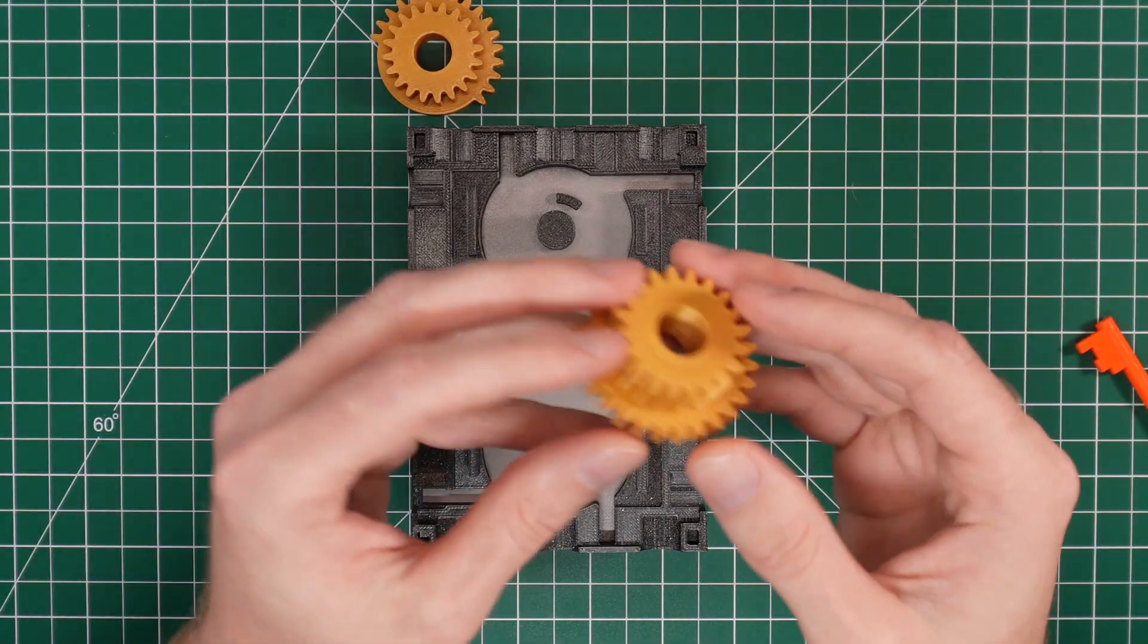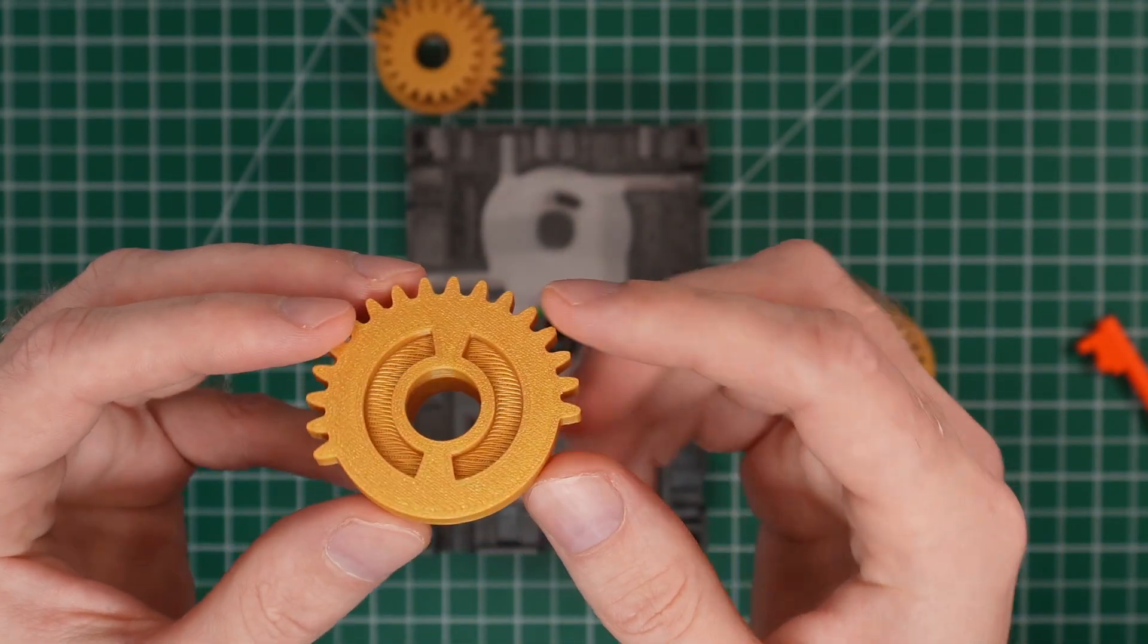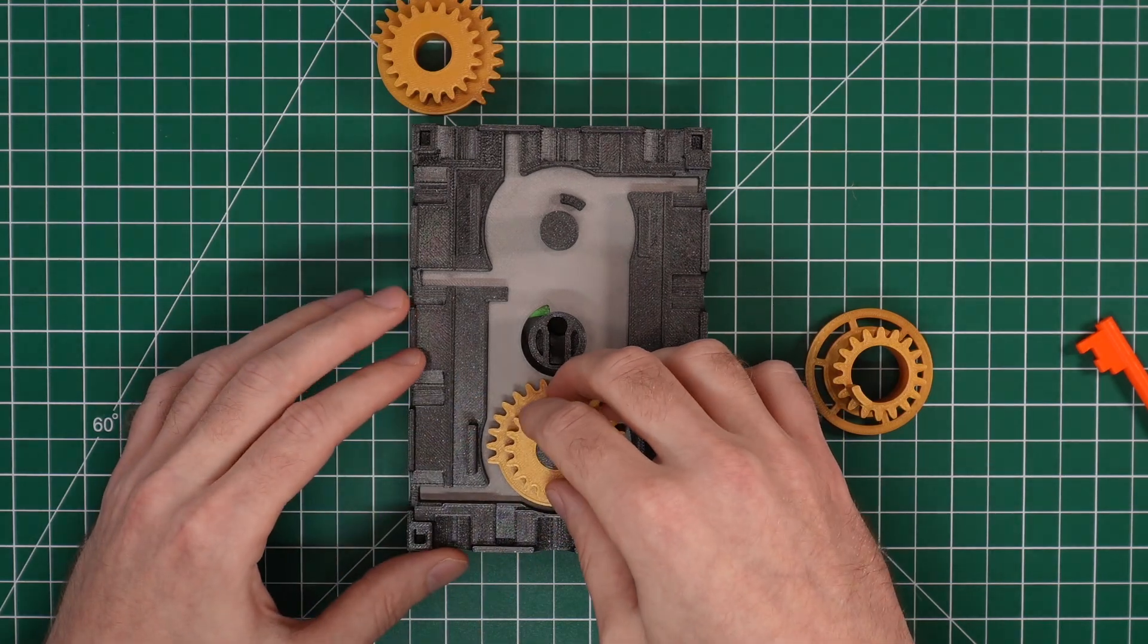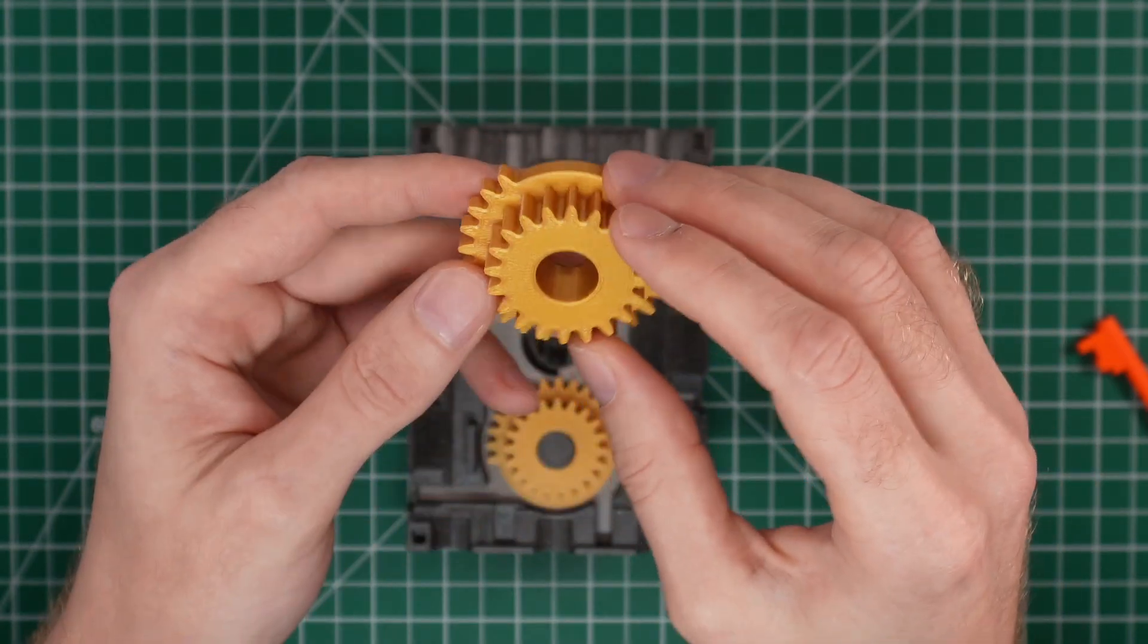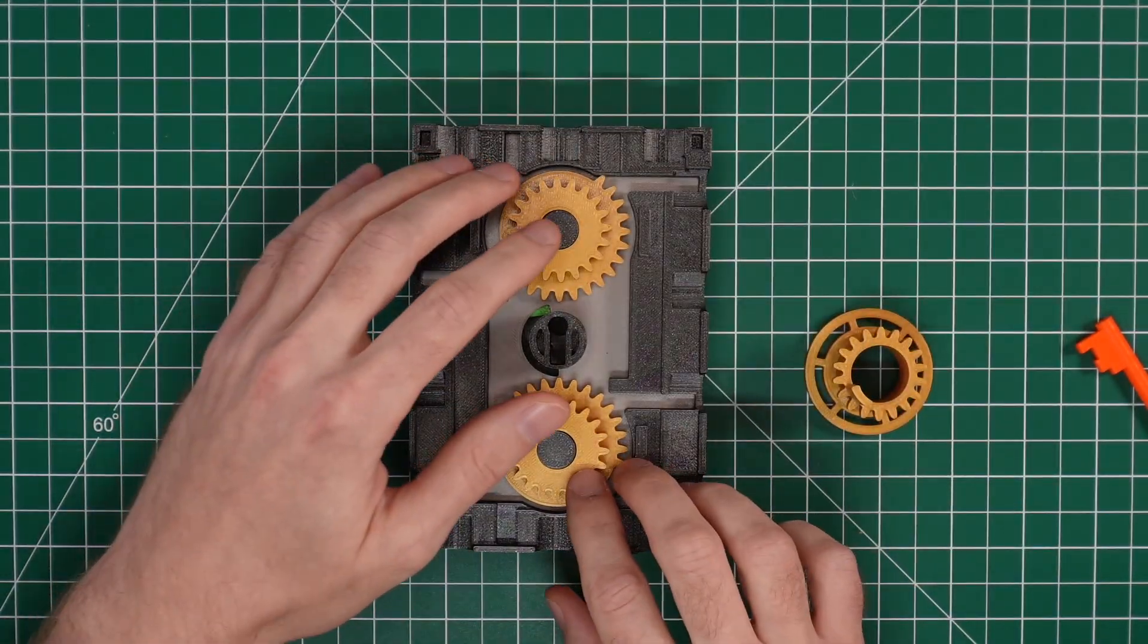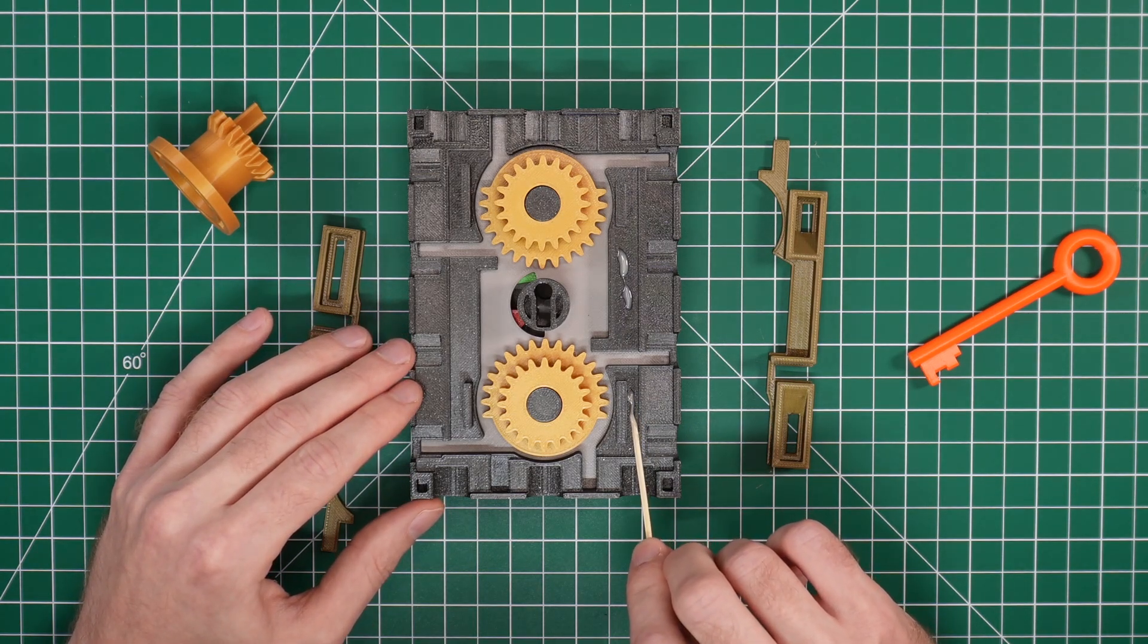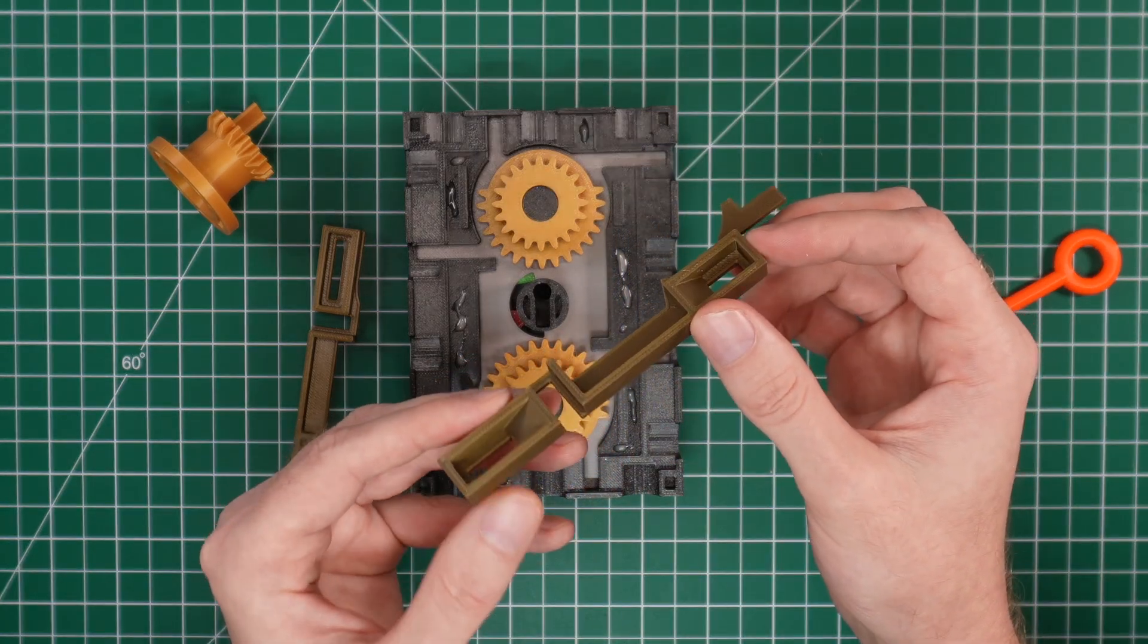We'll come back to the center gear in a bit, but the next step in the assembly process is adding the two outer gears. Each gear has a cutout on the bottom, which aligns with pegs in the door frame and limit their rotation to about 90 degrees. Both gears are the same, but we want to insert them with the lower set of gear teeth oriented towards the center of the door. With the gears in place, I added some glue to the door frame and added on these other frame pieces to hold the gears down.